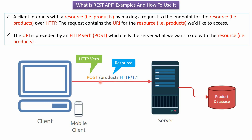Here you can see slash products — 'products' is the resource, and 'POST' is the HTTP method or HTTP verb. The client interacts with the resource by making a request to the endpoint over HTTP. The request contains the URI for the resource, preceded by an HTTP verb — in this case POST — which tells the server what we want to do with the resource.